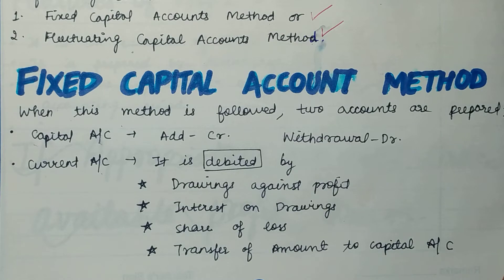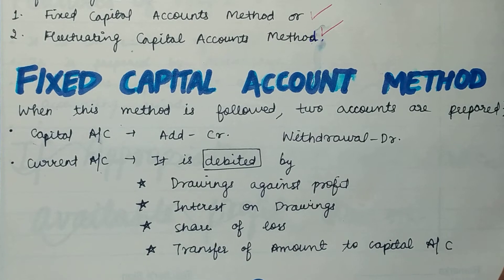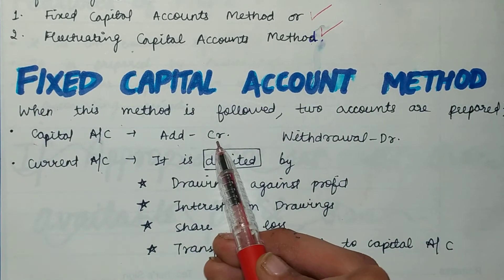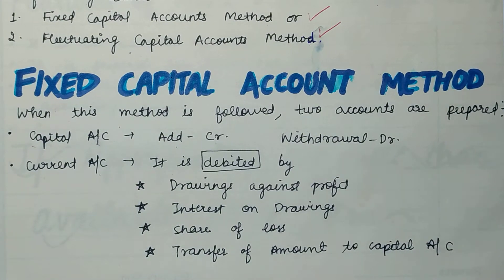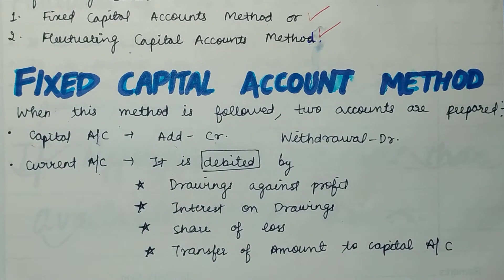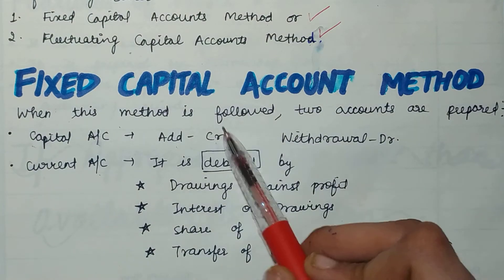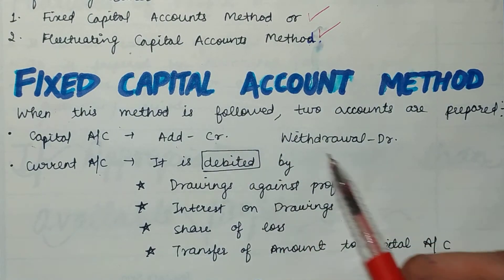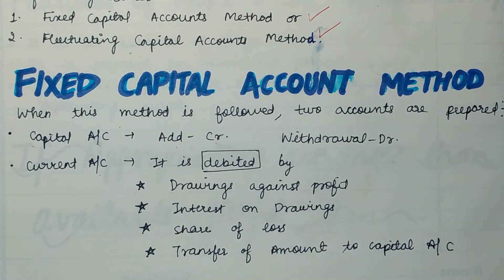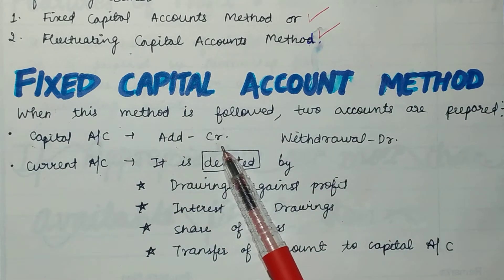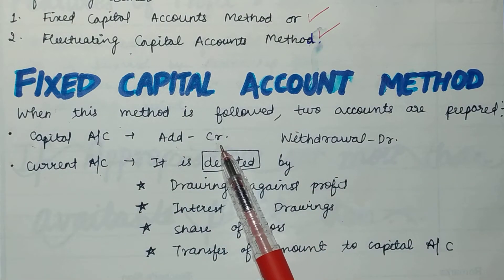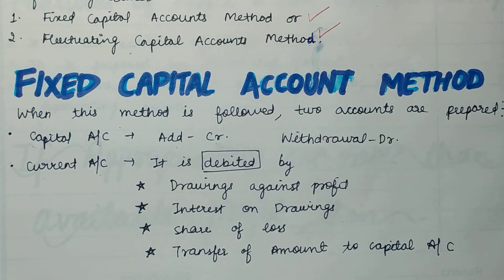Under the fixed capital method, there will be two accounts: the capital account and the current account. In the capital account, if a partner adds new capital it will be credited, and if they withdraw it will be debited — because capital is considered a liability. When a liability increases it is credited, when it decreases it is debited. So in the capital account, only additions and withdrawals are recorded.